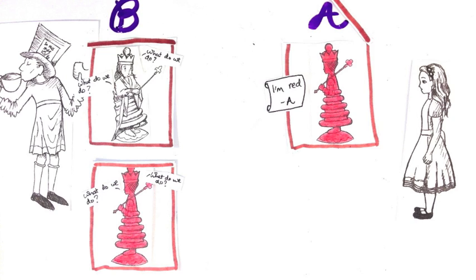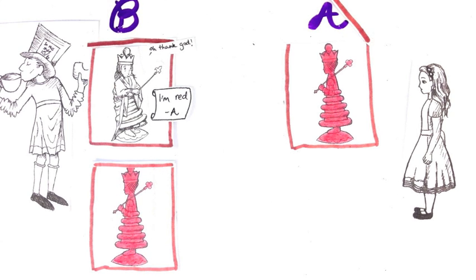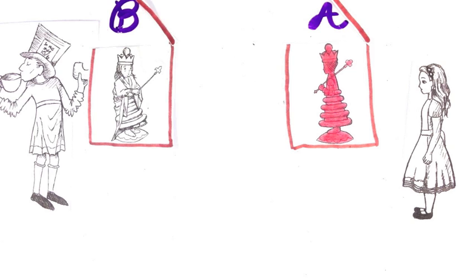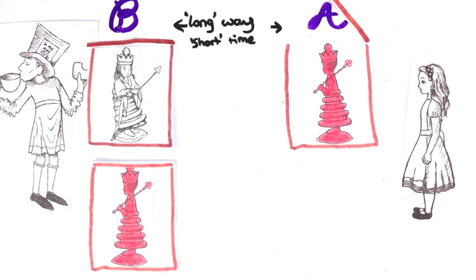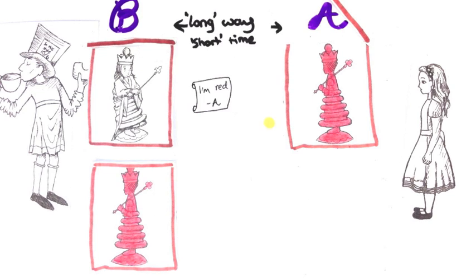A must tell B that it's been measured and what result it decided to be, or else B won't know what to do. But that message has to go an awful long way in a very short time. In fact, even light couldn't go that fast.